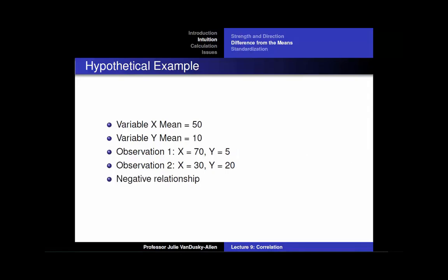Next, consider the next two variables, variable x and variable y. The mean of variable x is 50 and the mean of variable y is 10. In observation 1, x is 70 — above the mean of x — and y is 5 — below the mean of y. For observation 2, x is 30 — below the mean of x — and y is 20 — above the mean of y. This implies that there is a negative relationship between x and y: when an observation is above the mean of x, it is below the mean of y; when an observation is below the mean of x, it is above the mean of y.